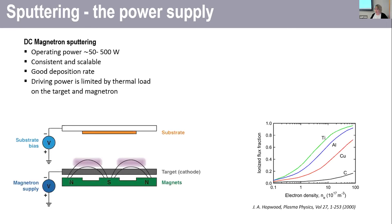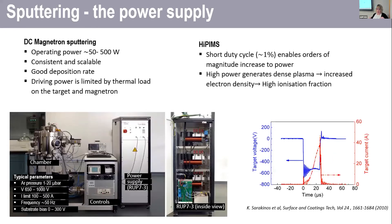The great thing about HiPIMS is it just uses a pulsing of the power in order to access a much greater instantaneous power. So the graph on the right here shows a typical HiPIMS pulse. The voltage is applied over a very short period in the range of microseconds. And this is applied at a frequency of say 50 hertz.